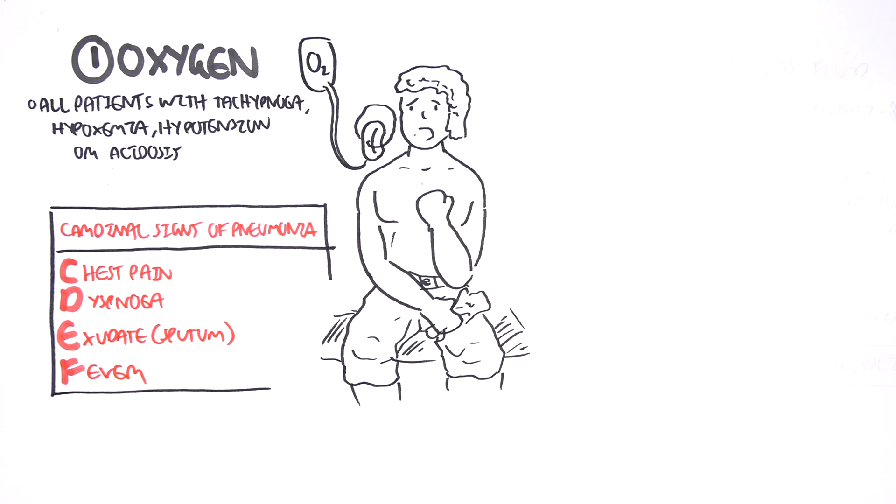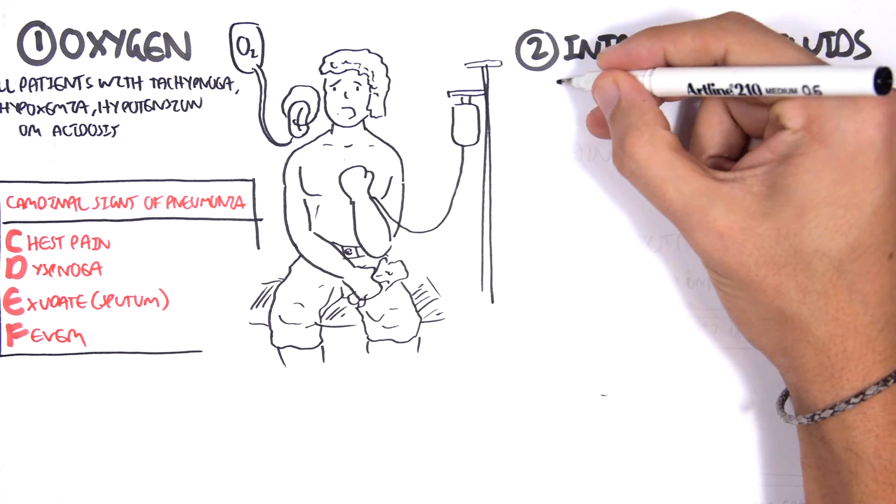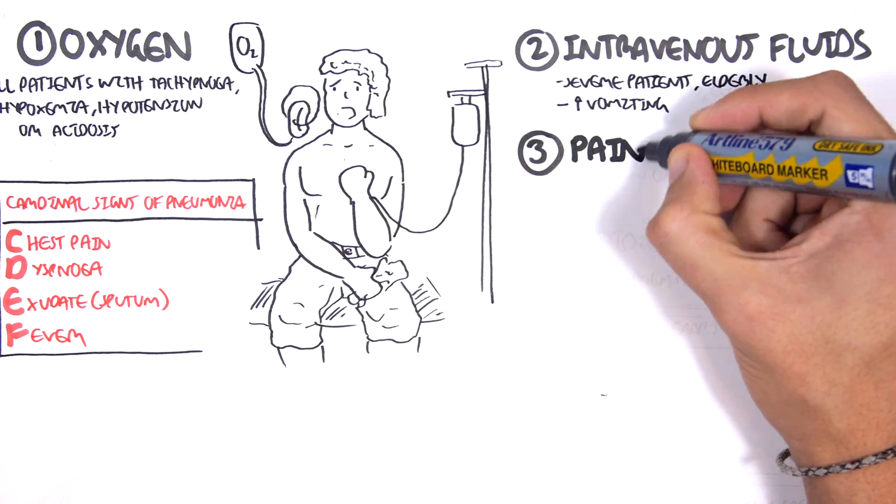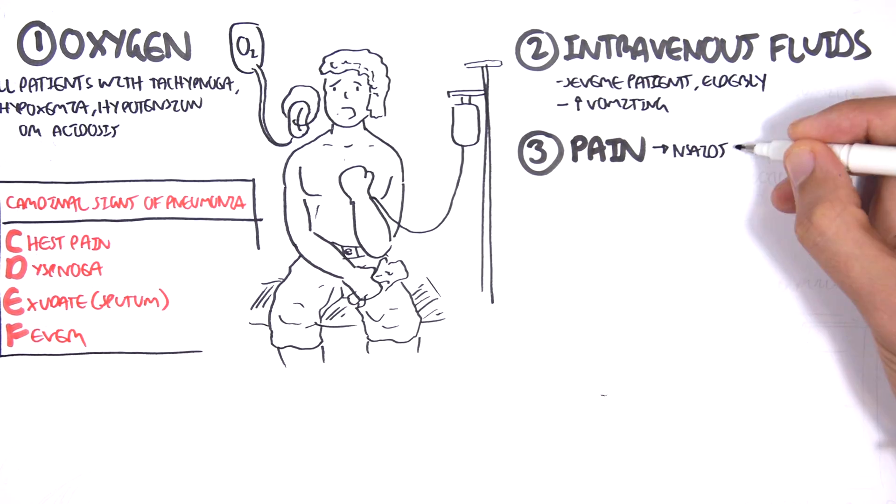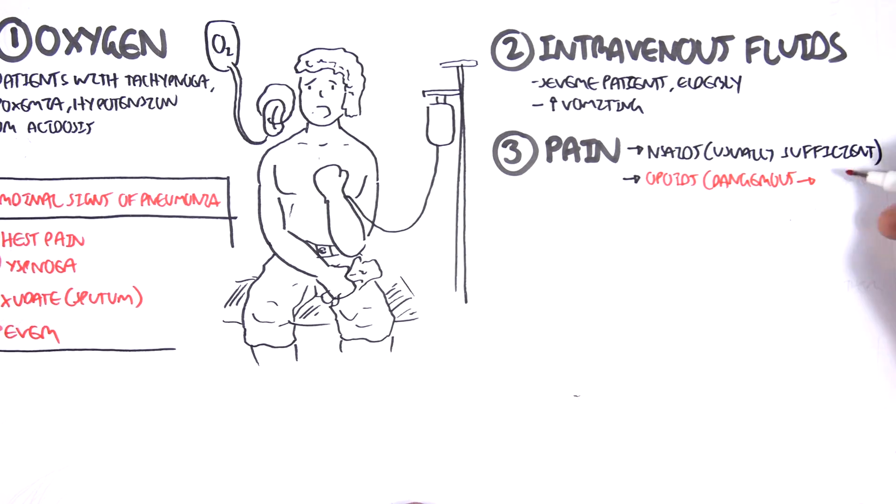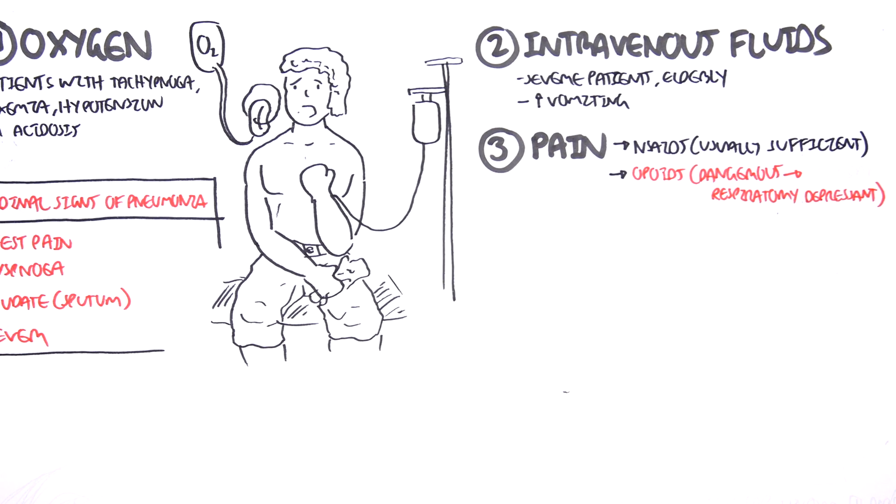Okay, let's continue with the management. So number one, oxygen. Two, intravenous fluids for severe patients, elderly, and those who are vomiting. Three, we use pain management. NSAIDs are usually sufficient, but opioids can be used. But it can be dangerous because it can lead to respiratory depression. But if it's monitored, it's good.